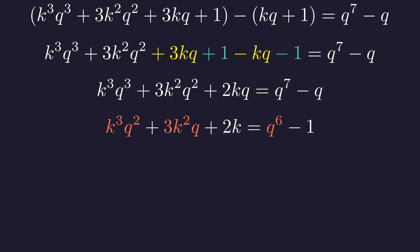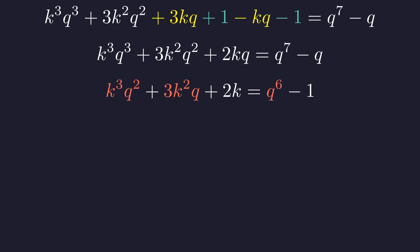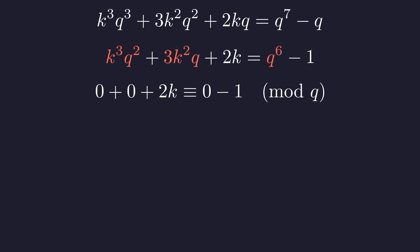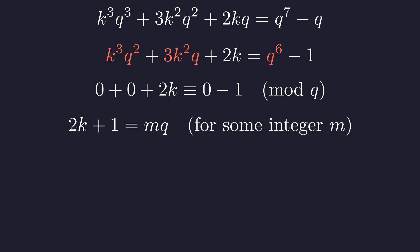We will again use modular arithmetic to analyze this relationship. Considering this equation modulo q, any term containing a factor of q will be congruent to zero. The equation simplifies significantly. We find that 2 times k is congruent to negative 1 modulo q. This congruence implies that 2 times k plus 1 must be a multiple of q. This provides a direct relationship between k and q.